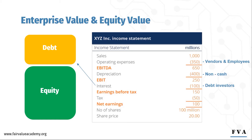Next, interest is paid to the debt holders. After that, taxes are paid to the government. And finally, what's left in the box after paying everyone else is net earnings, which go to the shareholders. So as you can see, there is actually some thought behind how the income statement is structured in terms of the order of rights to receive cash flows.